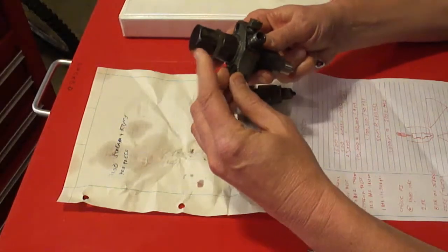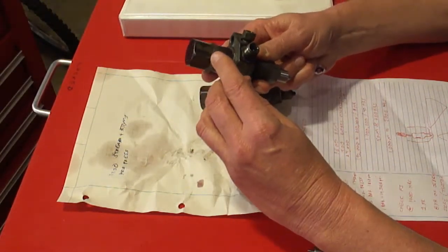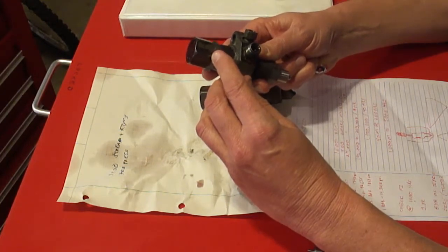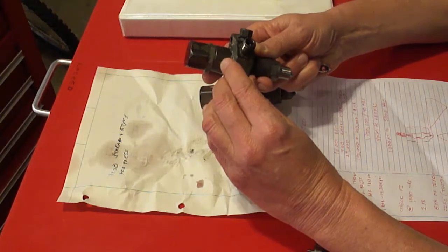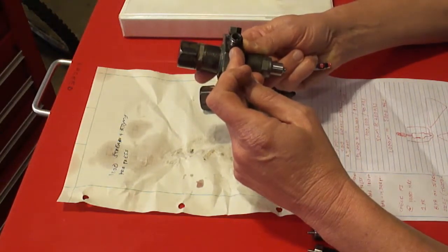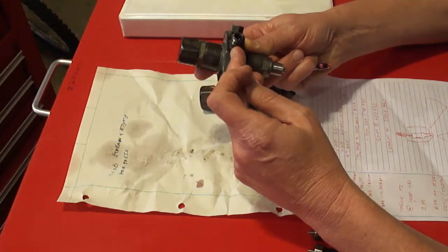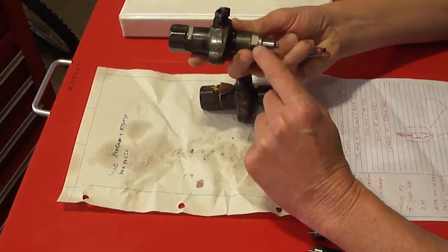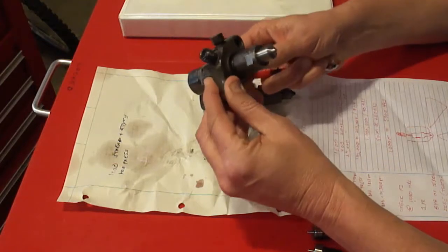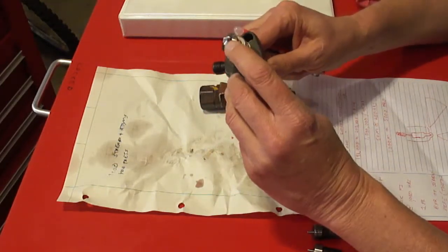A cap, an adjusting nut or cap underneath here that pushes against the spring, a lock nut, the body, the input for the diesel fuel, the nozzle, and a retainer here. This is a whole nozzle and there's two little holes in here.